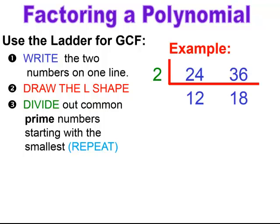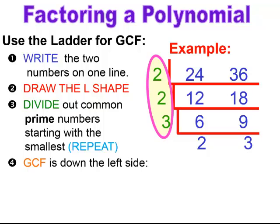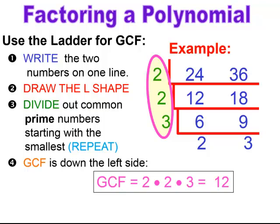I'm going to repeat this process until they no longer have common factors. With 12 and 18, 2 will divide into both, so I use 2 again as my prime factor: 12 divided by 2 gives 6, and 18 divided by 2 gives 9. Looking at 6 and 9, the common prime factor is 3. Dividing: 6 by 3 gives 2, and 9 by 3 gives 3. They no longer have common factors, so the GCF is the numbers on the left multiplied together: 2 × 2 × 3 = 12. So 12 is the greatest common factor of 24 and 36.